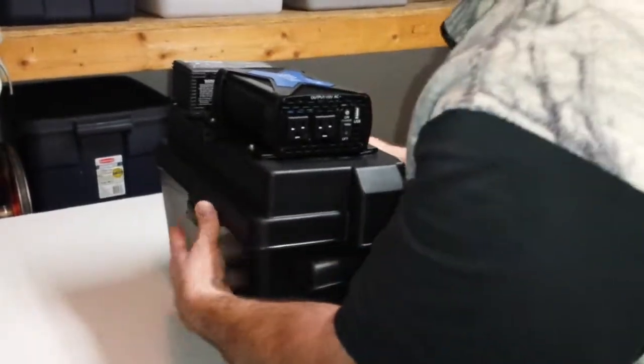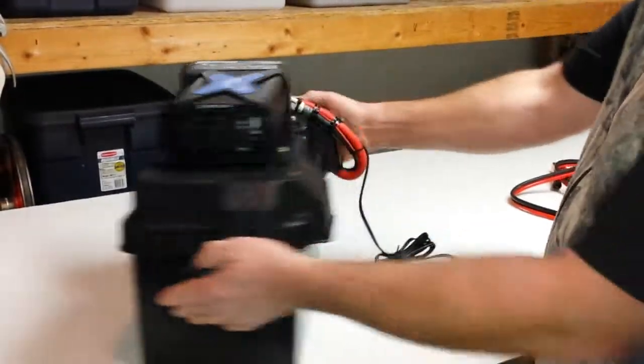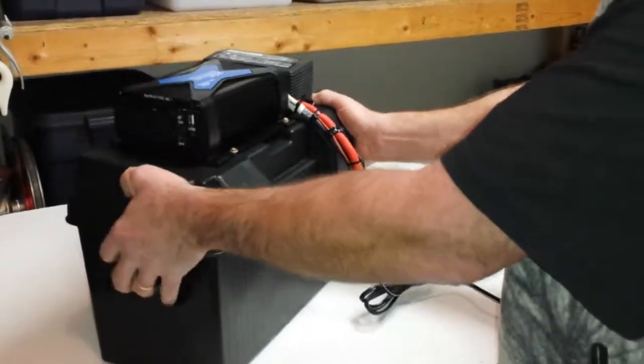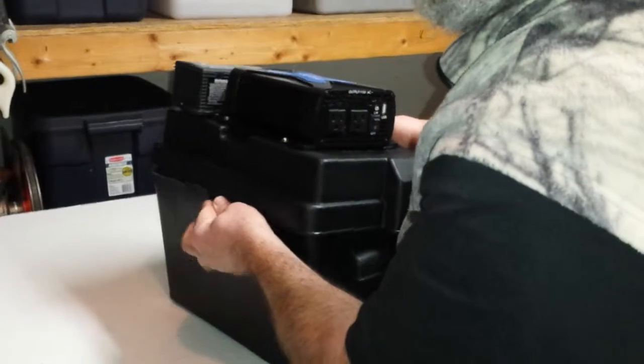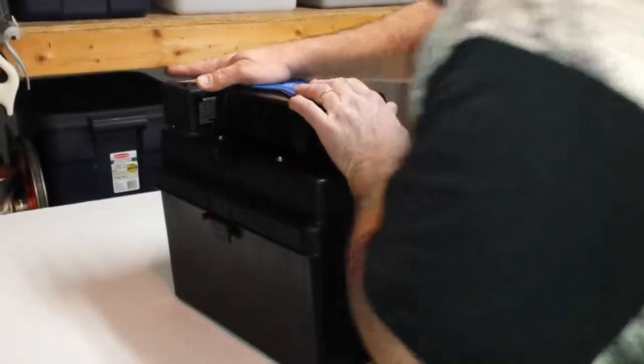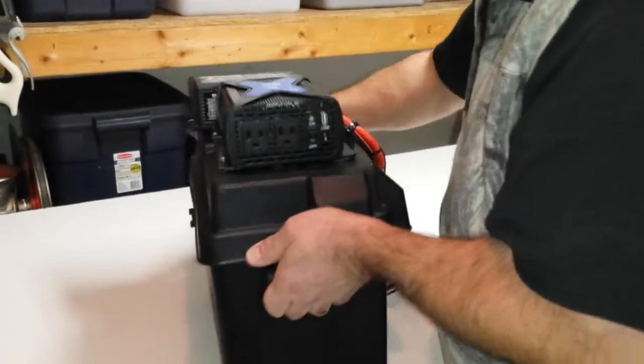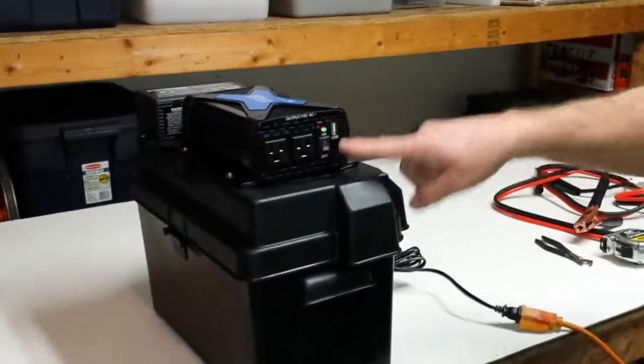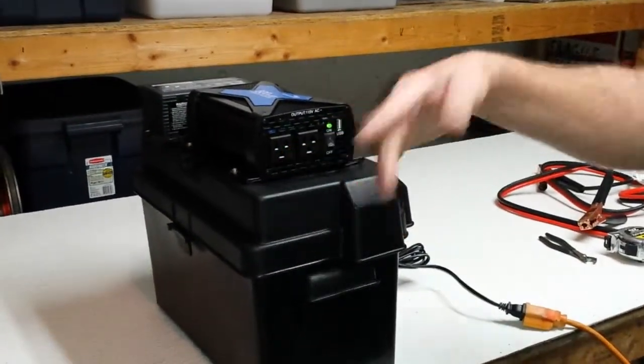Reassemble your power pack the same way as we did before, starting one tab in first, then lining up the second tab, pushing down to where they both click. Pick up your battery, bring it back in the house, turn it on, and plug your devices back in.